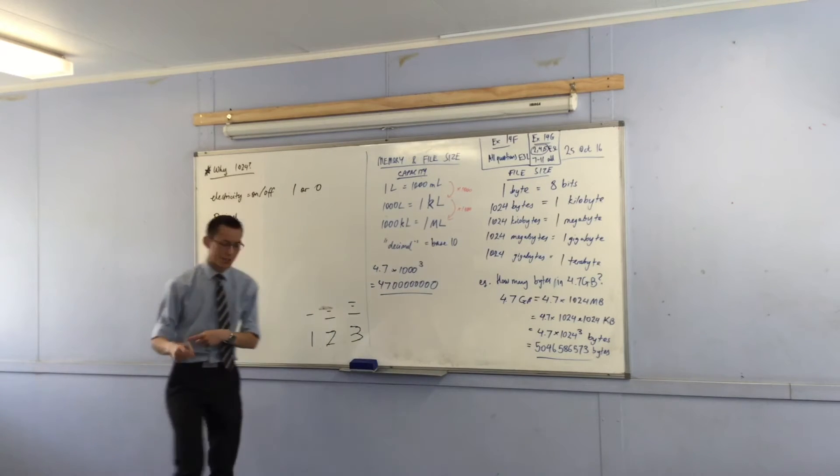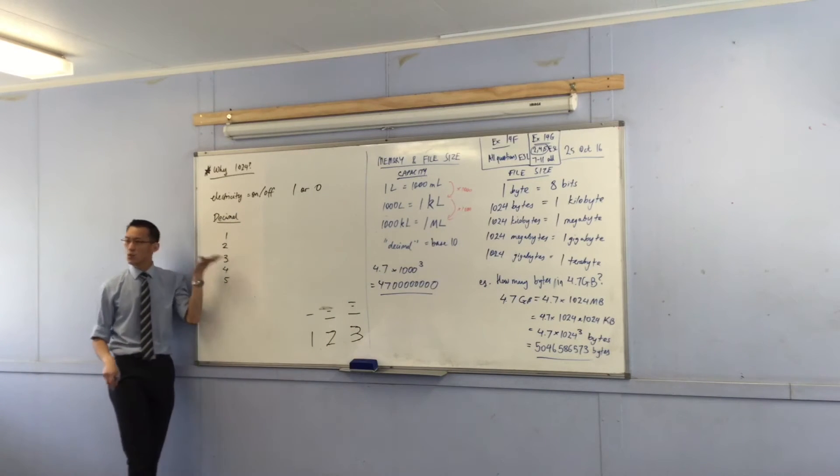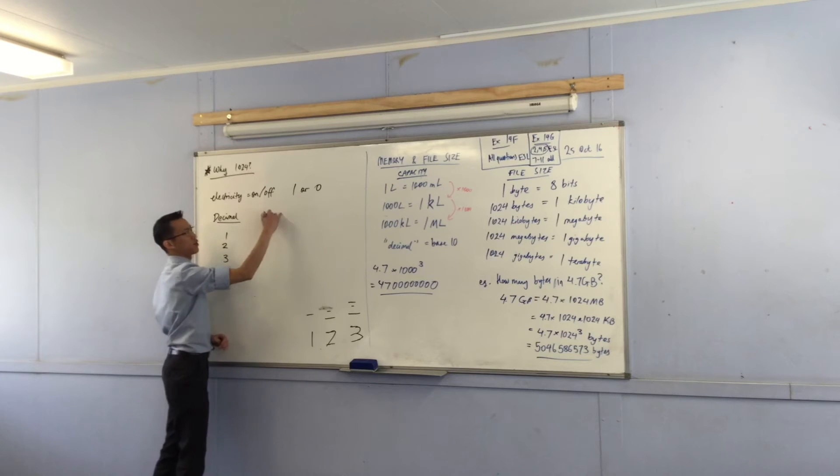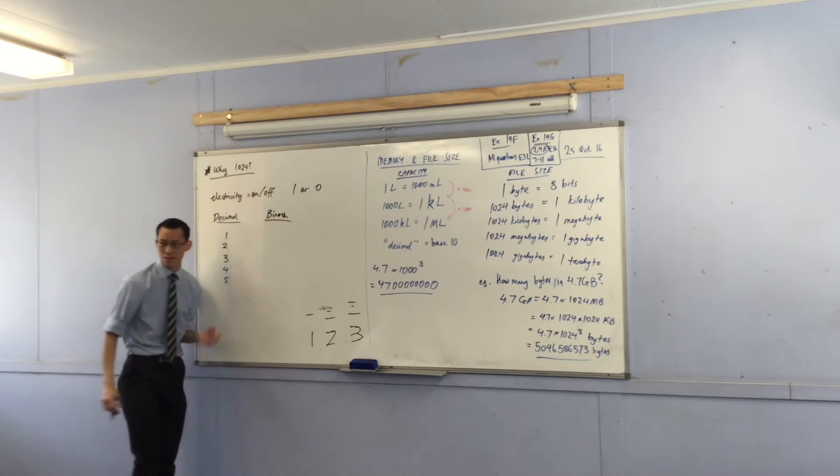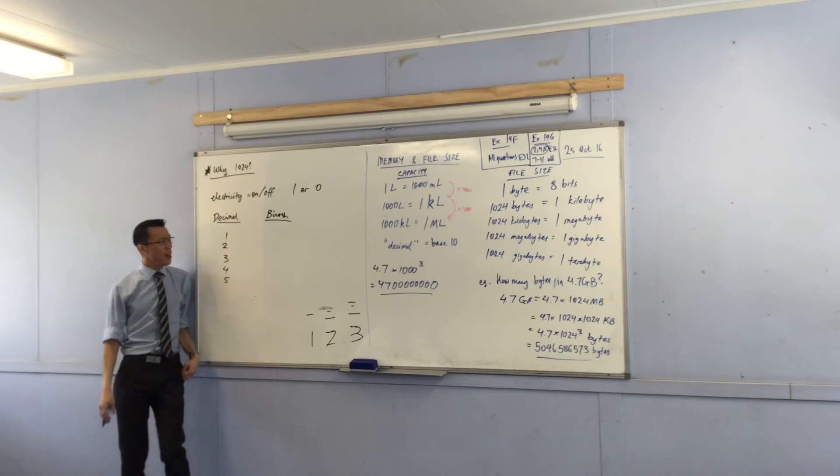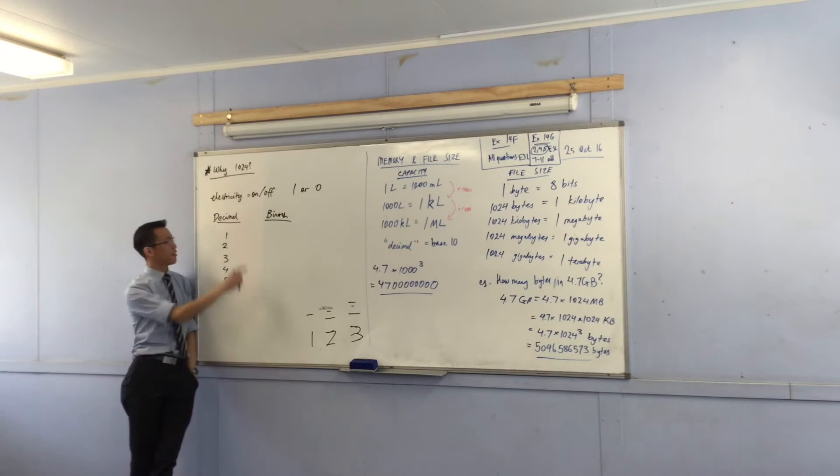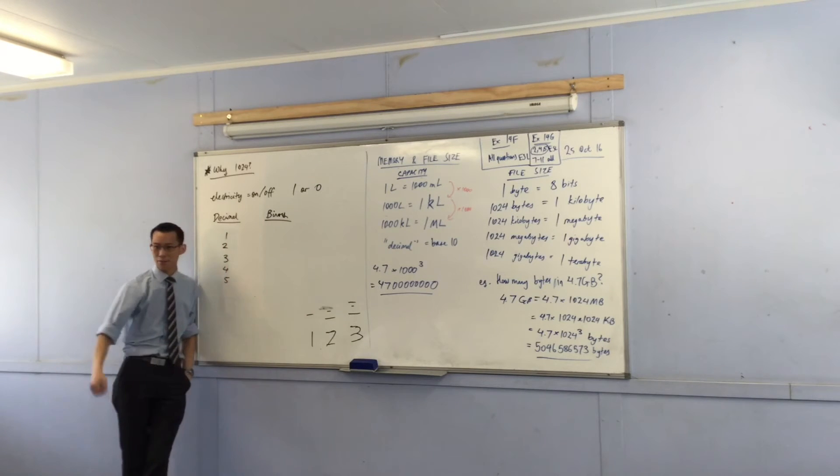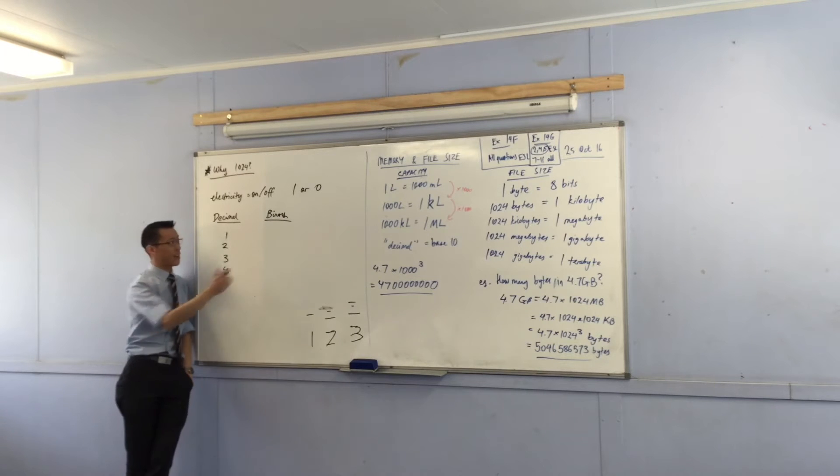Now think about this - we call it binary because it's only got two options, bi- like bicycle. Thinking about how you would count - to count to one is easy enough. You went zero then you went one.